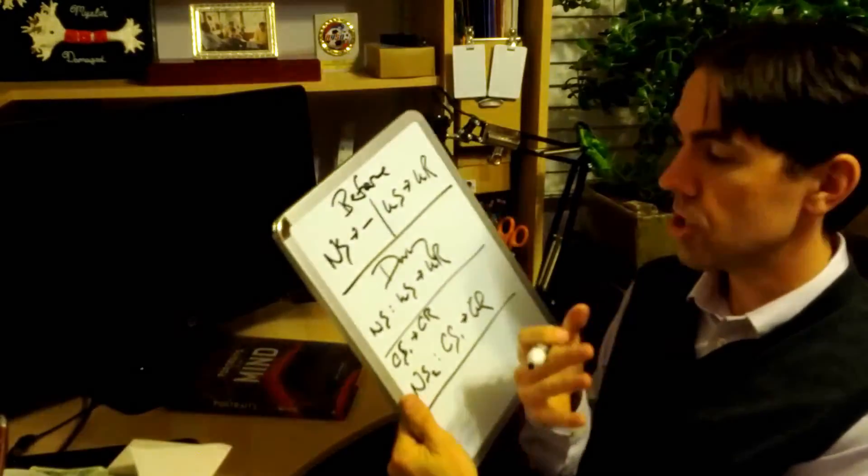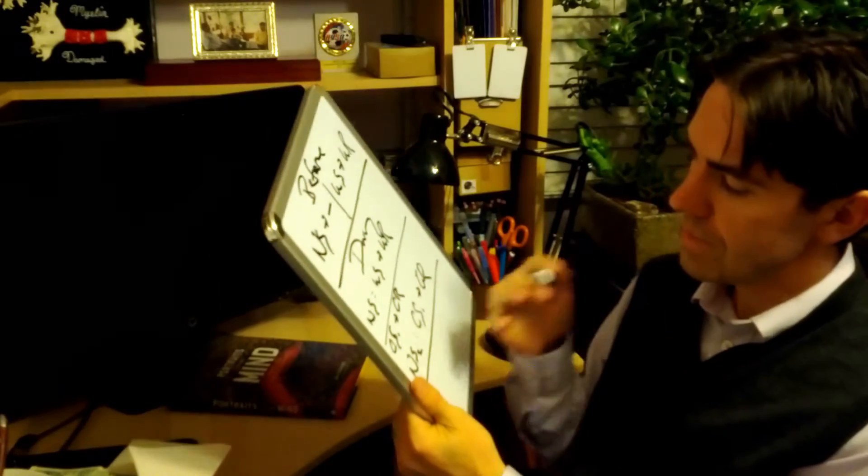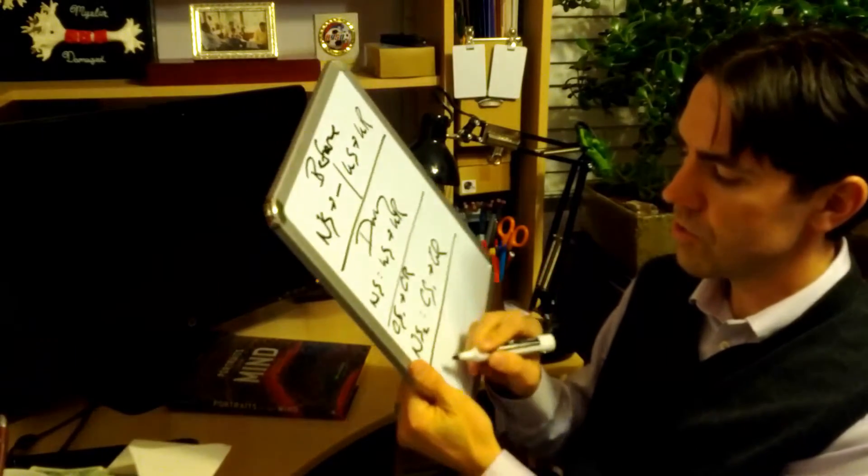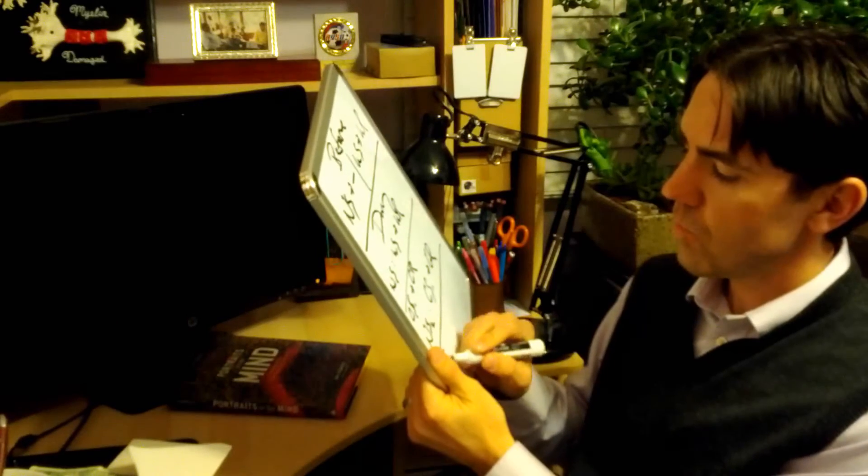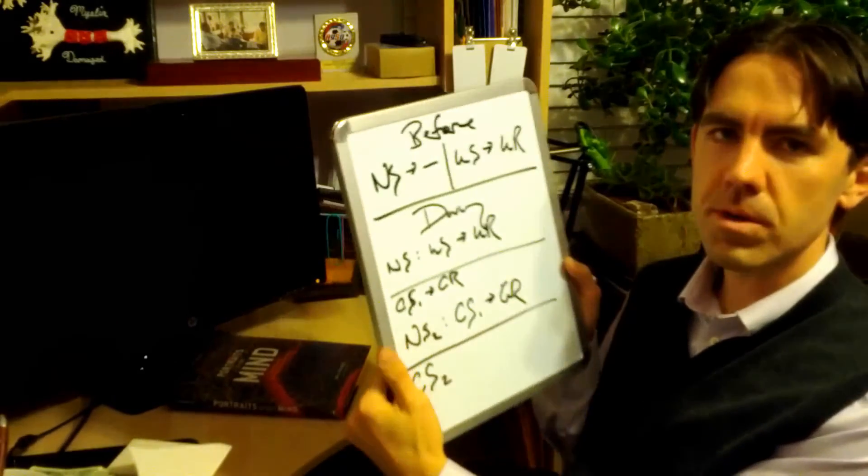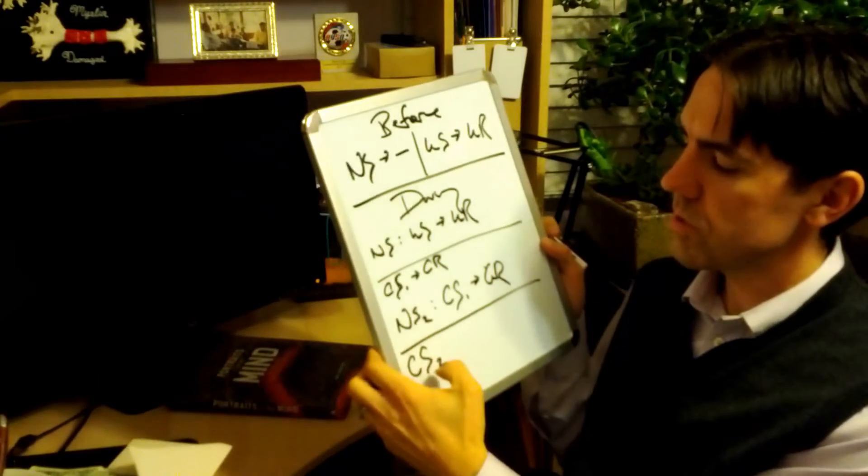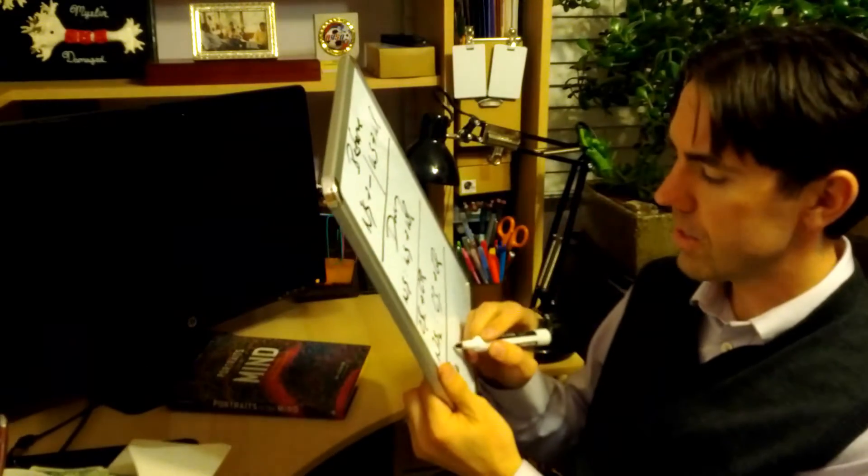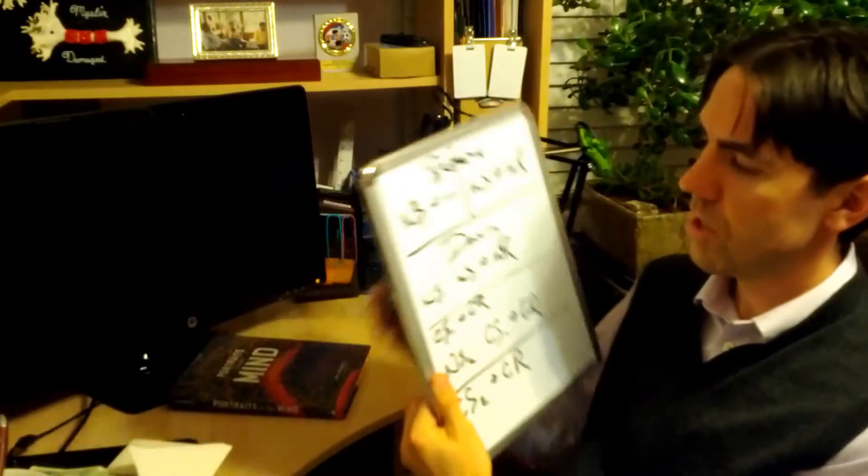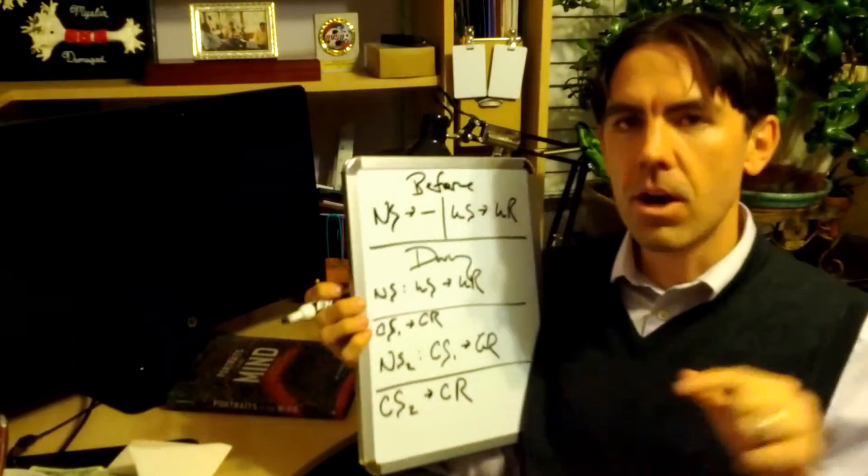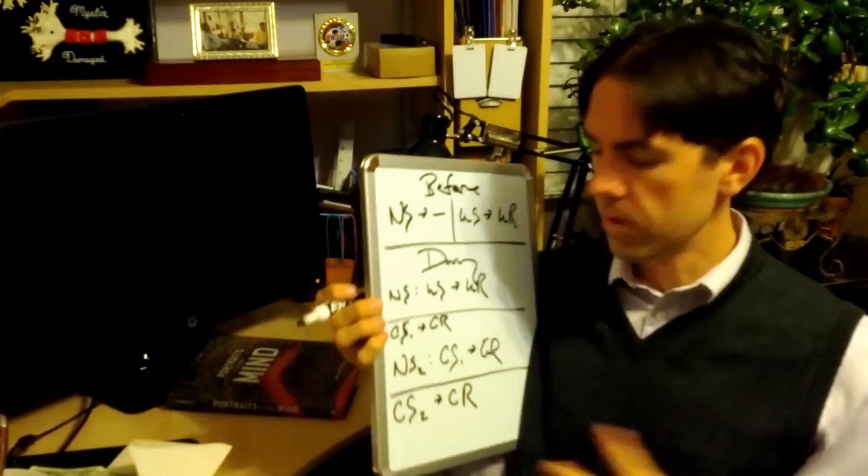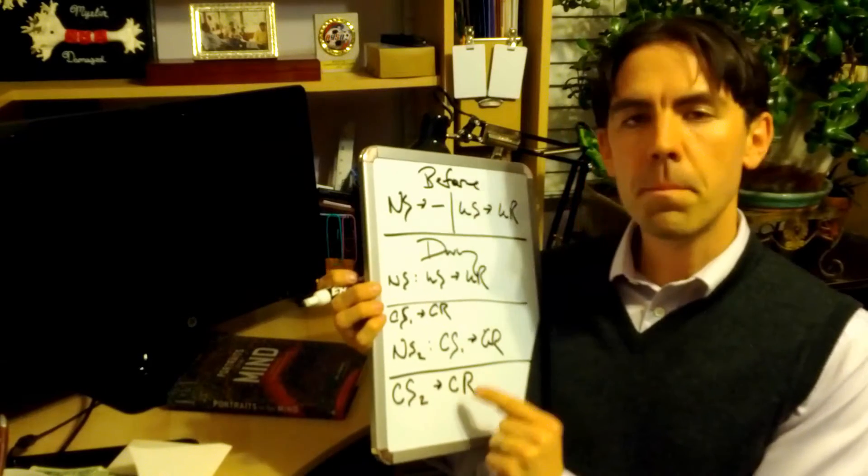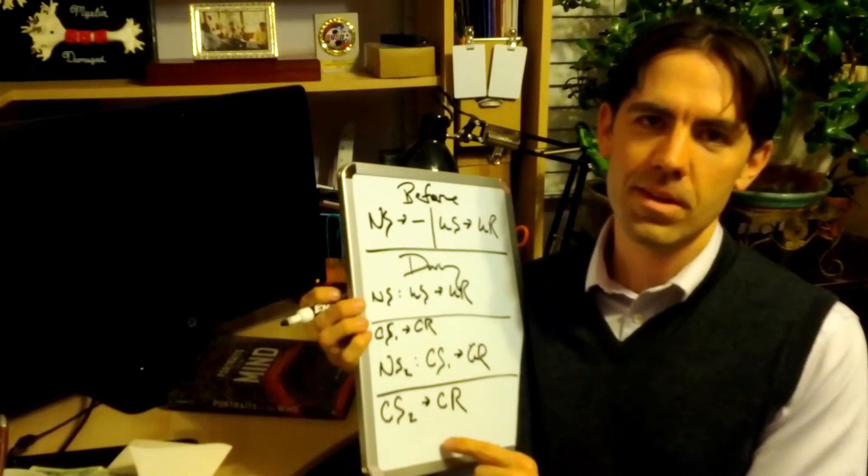Now we're going to have an additional after phase and that additional after phase, the neutral stimulus number two will become a conditioned stimulus number two. And that conditioned stimulus number two will start to automatically elicit a conditioned response. So that card, that card in and of itself or that envelope, however you want to view it, will start to make an individual happy.